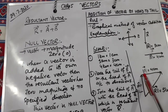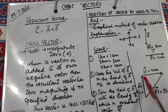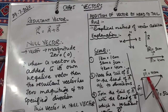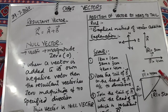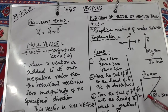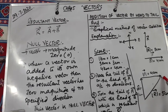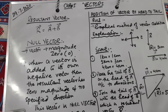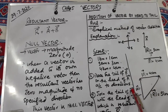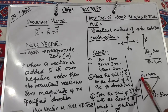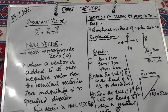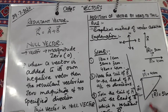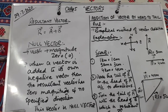So the head of the first vector is joined with the tail of the next vector. The tail of the resultant vector starts from the tail of the first vector, and the head of the last vector marks the end of the resultant. The resultant vector is directed from the tail of the first vector to the head of the last vector. This method is known as the head to tail rule.